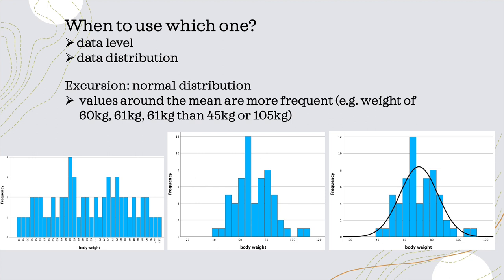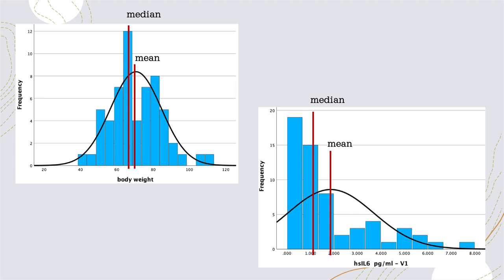In an optimal scenario, the bars would pretty much fit under the normal distribution curve. Here we can see it is somewhat approximating the normal distribution.